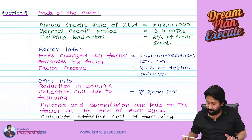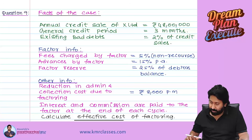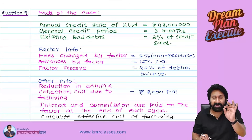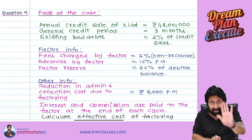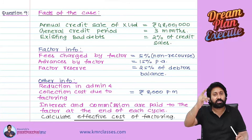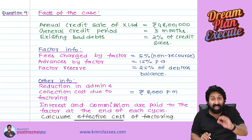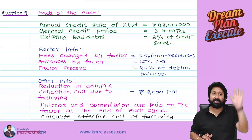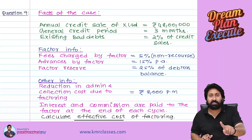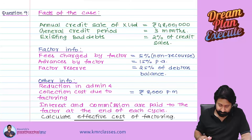Bad debts = 2% of total credit sales = 2% of 48 lakh = 96,000 per annum (24,000 per cycle × 4 cycles). Crucially: bad debts are calculated on total annual credit sales, but advance interest and similar charges are calculated on a per-cycle basis, because the full 48 lakh is not blocked all year — only 12 lakh is blocked at any point in time for three months.